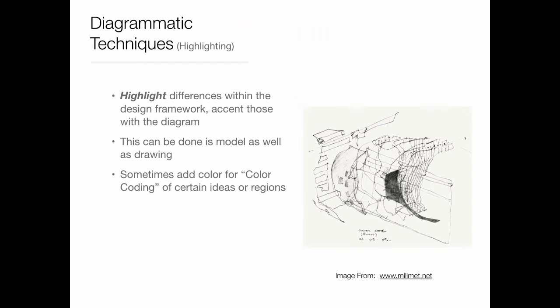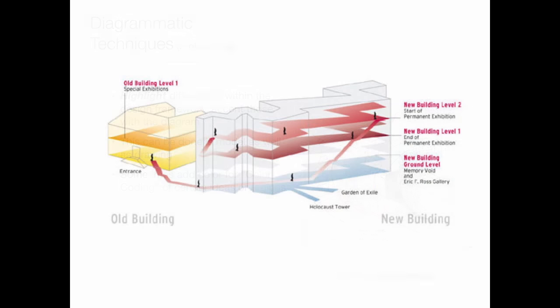Highlighting is basically showing differences within the design to accent them with the diagram. It can be done in model or in drawing — you can color code pieces of your model or drawing. Sometimes color coding is the best way, though highlighting could also be done just with a change of tone or darkness. You get the idea.